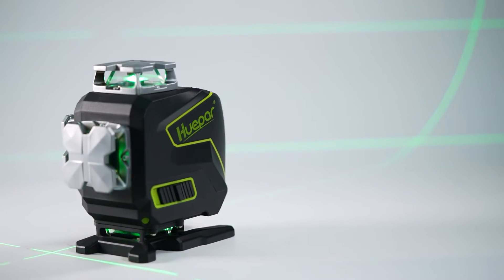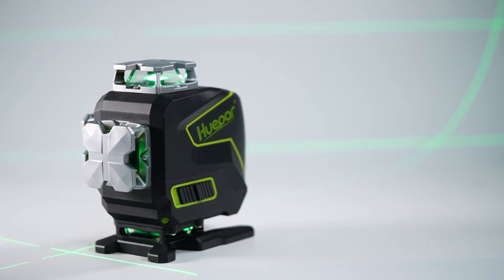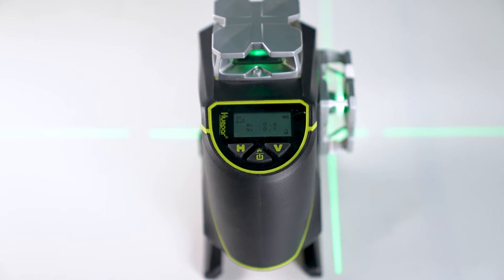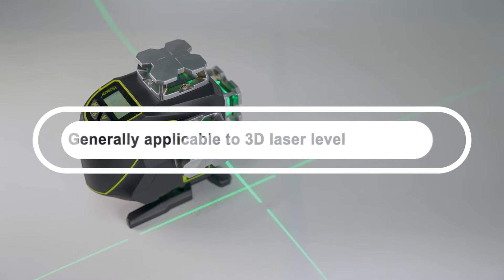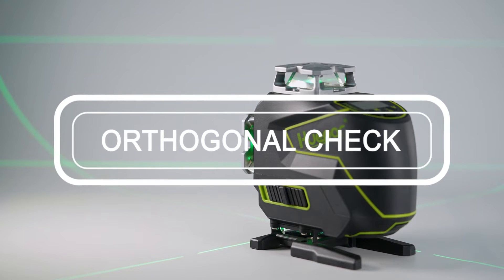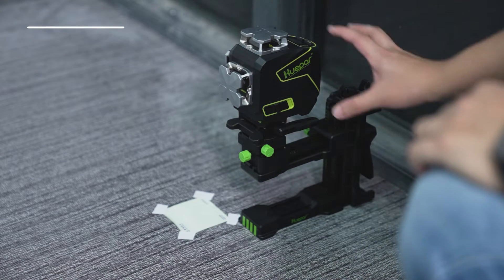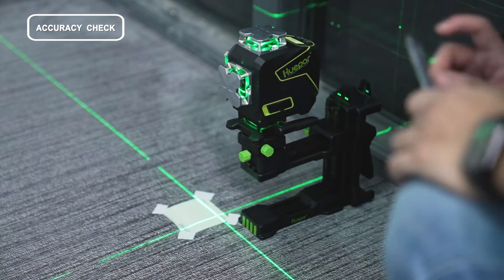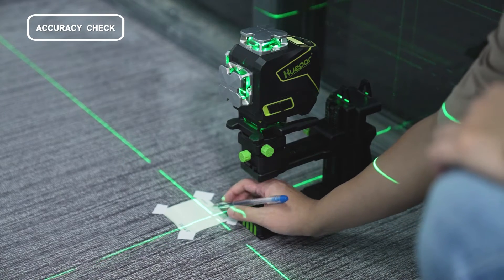This video is about the last part of the accuracy check of laser beam orthogonal check, also generally applicable to 3D laser levels. Install the laser tool on the equipped bracket and place it on flat ground.